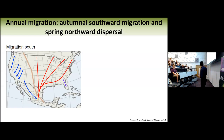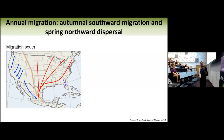This map shows the migration of monarchs in the fall. They go from Canada and the United States down to Mexico, shown in the red arrows. There are also butterflies west of the Rocky Mountains, shown in blue arrows, that migrate to the California west coast. This is an updated map because we now know there is actually exchange between these two different groups of butterflies.